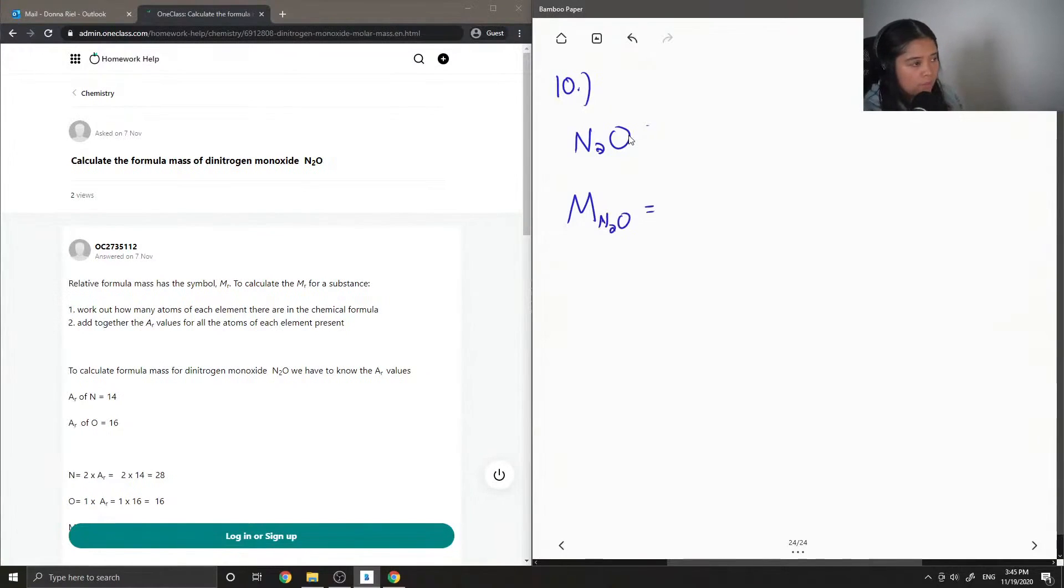To find the molar mass of dinitrogen monoxide, we would need the atomic masses of both nitrogen and oxygen. So I'm going to multiply the atomic mass of nitrogen by 2, since there are two atoms of nitrogen in the compound. Then I'm just going to add this with the molar mass of oxygen. So the molar mass of nitrogen can be found on the periodic table. It's just 14.01 grams per mole. And the molar mass of oxygen is 15.99 grams per mole.